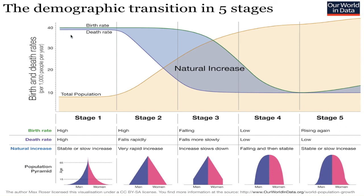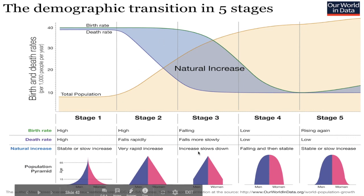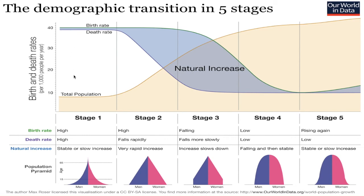As we move through these stages, you can see there are three curves that move along with us. The green one on top is the birth rate. The blue curve is the death rate. And the orange curve is the total population of that country. The difference between birth and death would show you the natural increase rate — natural meaning birth and death, the natural processes we go through as humans. So this is not including migration. There's no migration being included in this DTM.